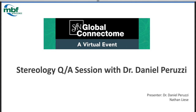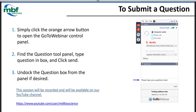This is the Stereology Q&A session. We're going to cover a few things first, but one of the things I want to touch on is how to submit a question. Everyone should have a GoToWebinar panel with an orange arrow. You can click on that, see a question area, type your question, and click Send. We'll field as many questions as possible today.